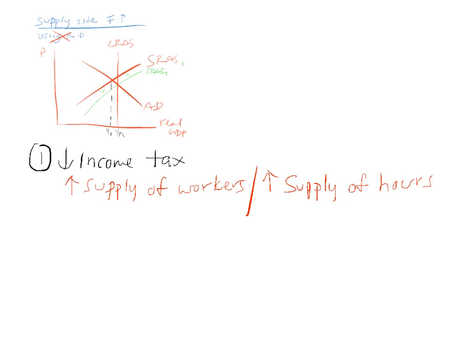Basically, if you reduce income tax, disposable income goes up, so people will want to work more. And that will increase your short-run aggregate supply.